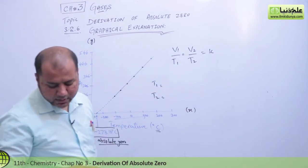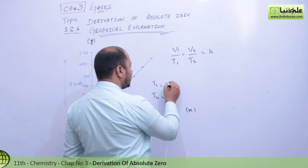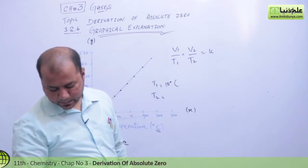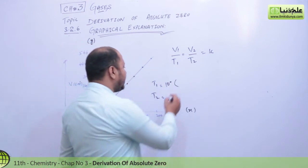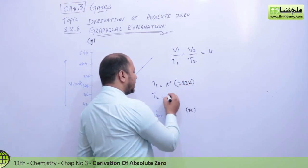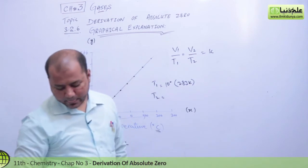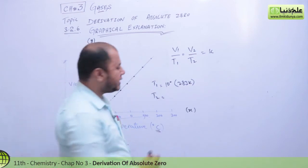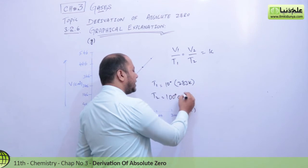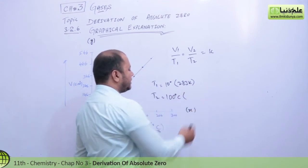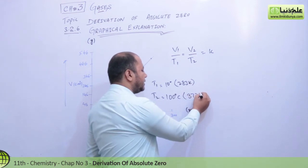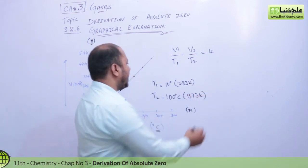Let's say T1 is 10 degrees Celsius, which converts to 283 Kelvin. And if we take a higher temperature of 100 degrees Celsius, that becomes 373 Kelvin on the Kelvin scale.